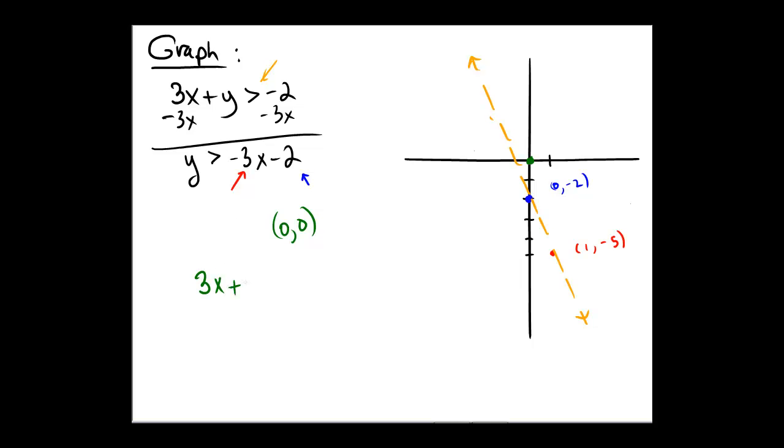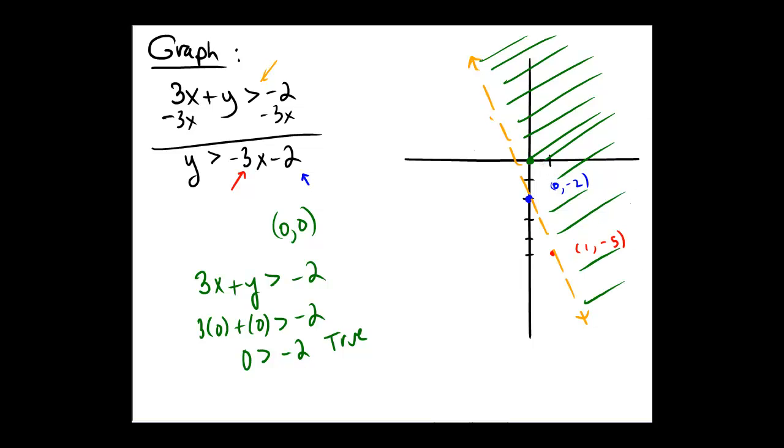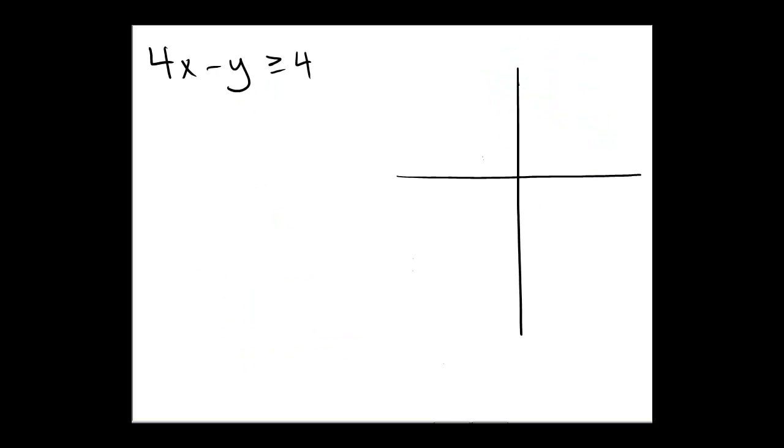I'm going to take the original 3x + y > -2, replace x and y with 0, so 3(0) + 0 > -2. Evaluate: is 0 > -2? This is a true statement, and therefore the shading is going to go on this side, because the place where that test point was is a true point. If it were false, we would shade the other side.